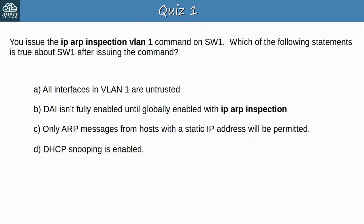Quiz question 1: You issue the ip arp inspection vlan 1 command on SW1. Which of the following statements is true about SW1 after issuing the command? The answer is A — all interfaces in VLAN 1 are untrusted. Just like in DHCP snooping, when DAI is first enabled all interfaces will be in an untrusted state by default. To trust specific ports, you'll have to configure them manually.